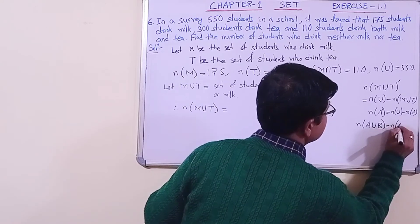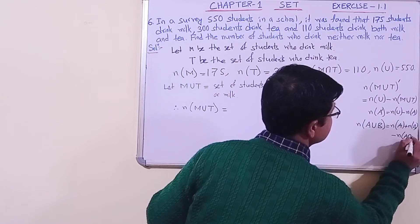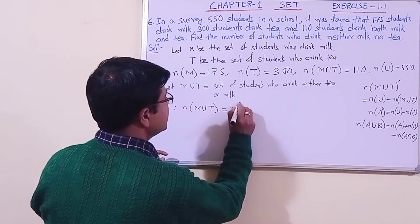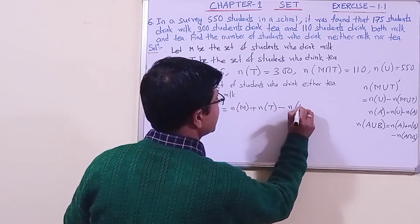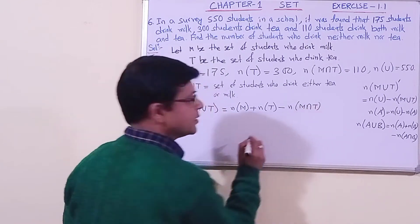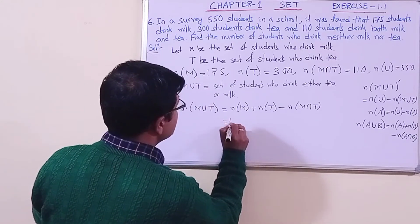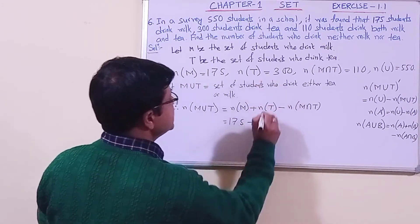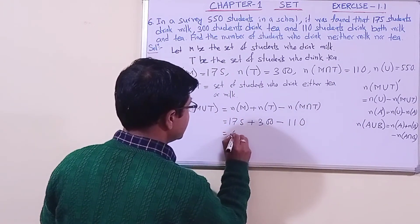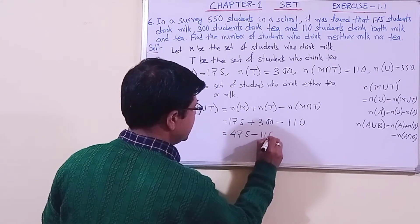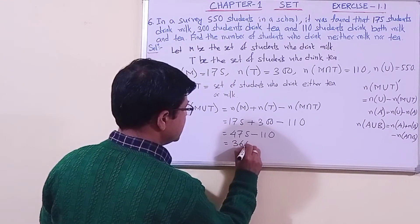We know the formula: n(A∪B) = n(A) + n(B) − n(A∩B). So it is n(M∪T) = n(M) + n(T) − n(M∩T). Substituting the values: 175 + 300 − 110 = 475 − 110 = 365.